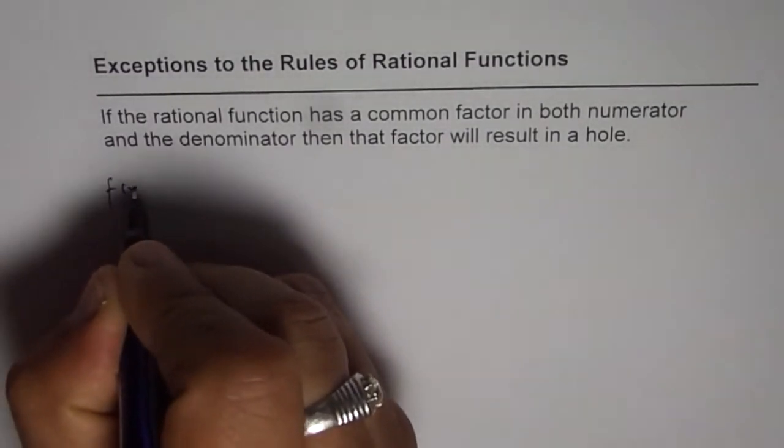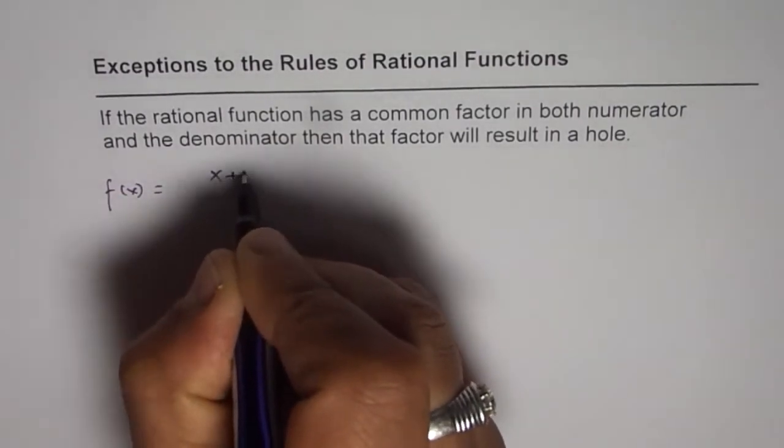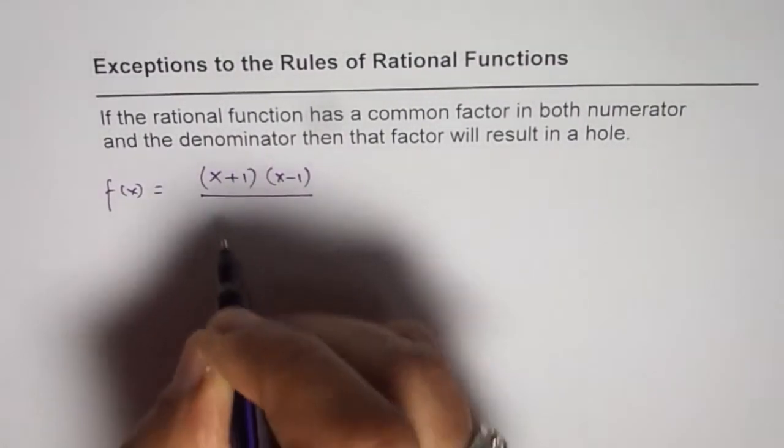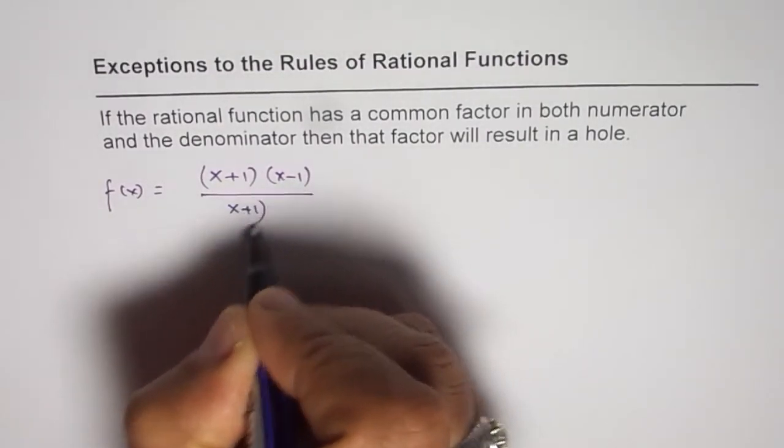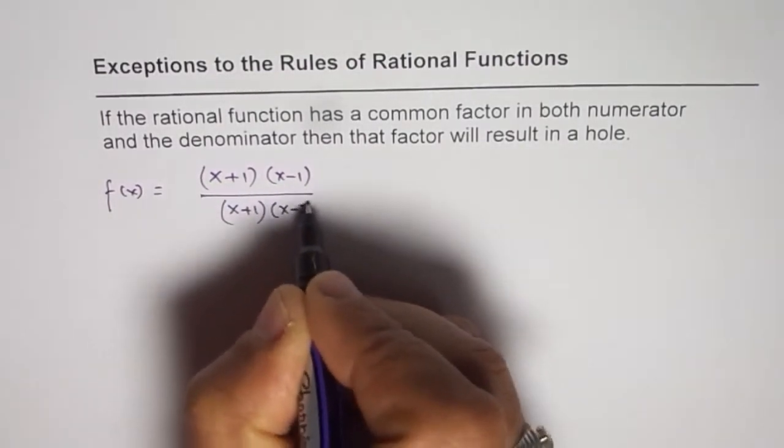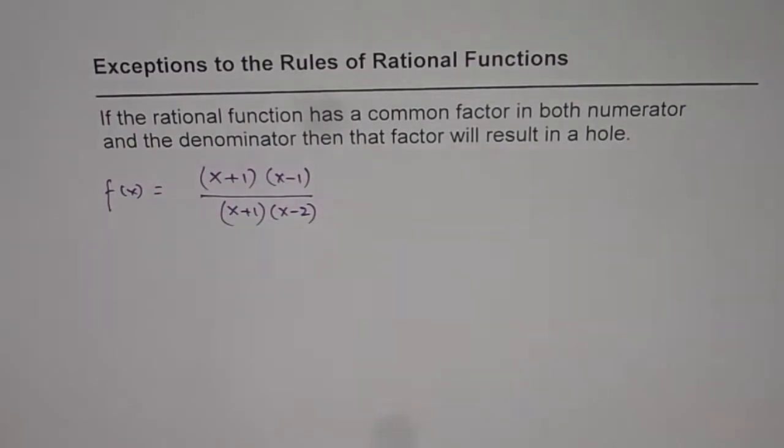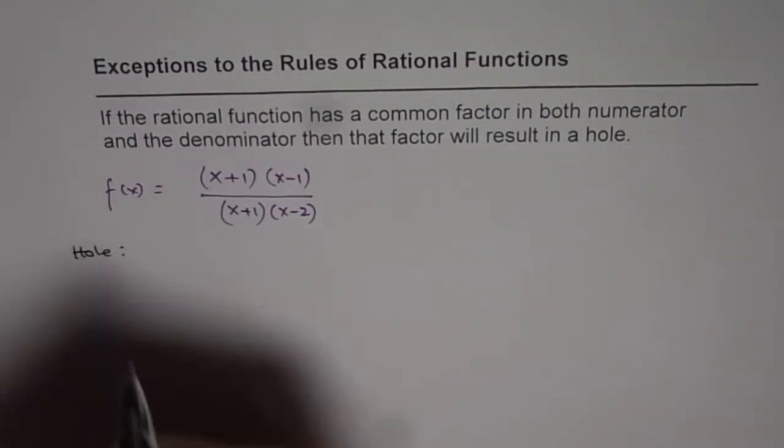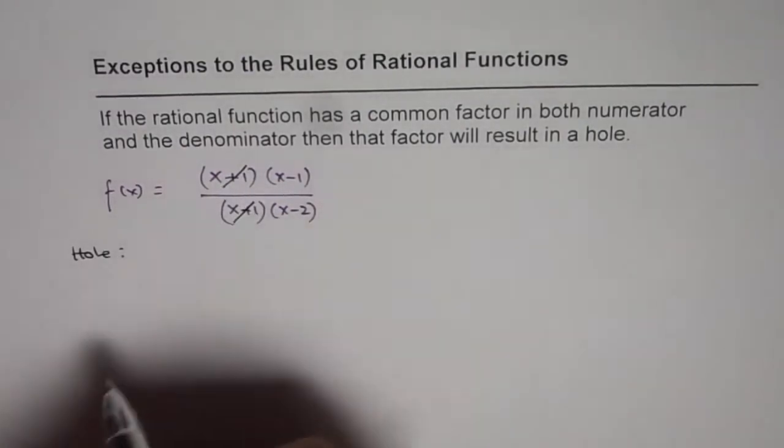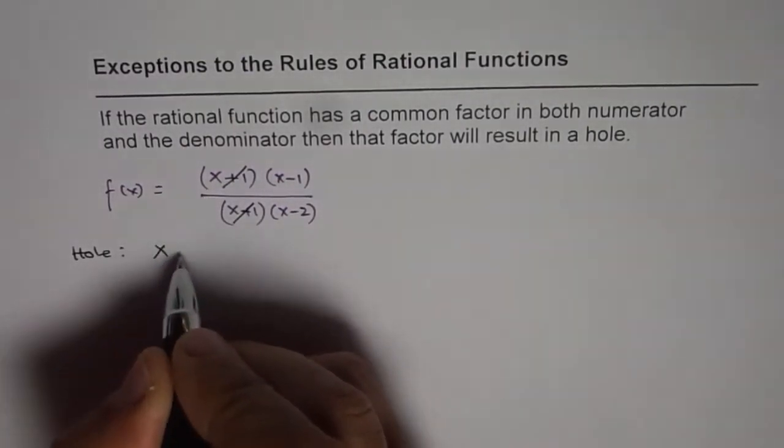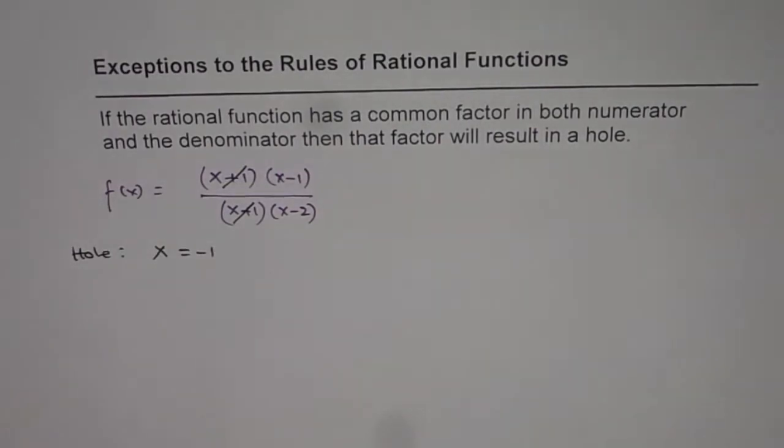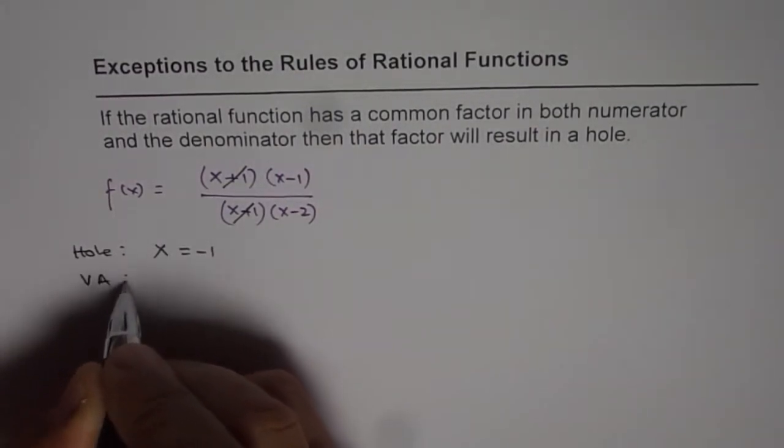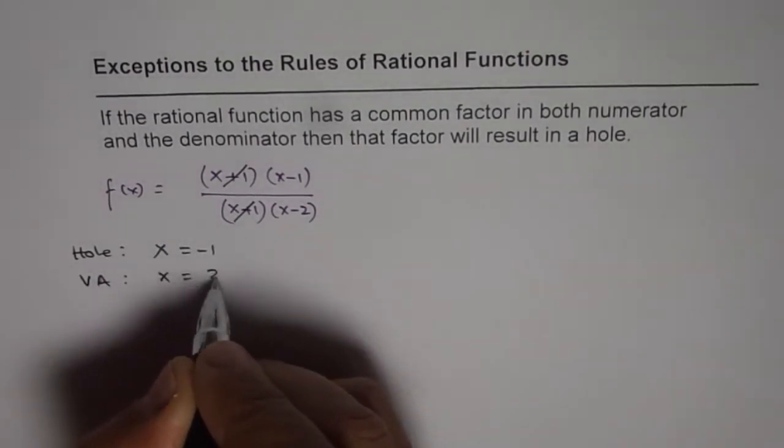It really means that if I have a function f of x equals x plus 1 times x minus 1 divided by x plus 1 times x minus 2, in that case we will have a hole at which point x plus 1 cancels out, so we will have a hole at x equals minus 1. And we will have a vertical asymptote at x equals 2.